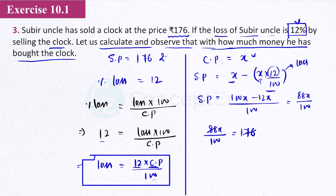Solving: 176 divided by 88 times 100 gives x equals 200. So the value of x is 200 rupees. Therefore cost price is 200 rupees.